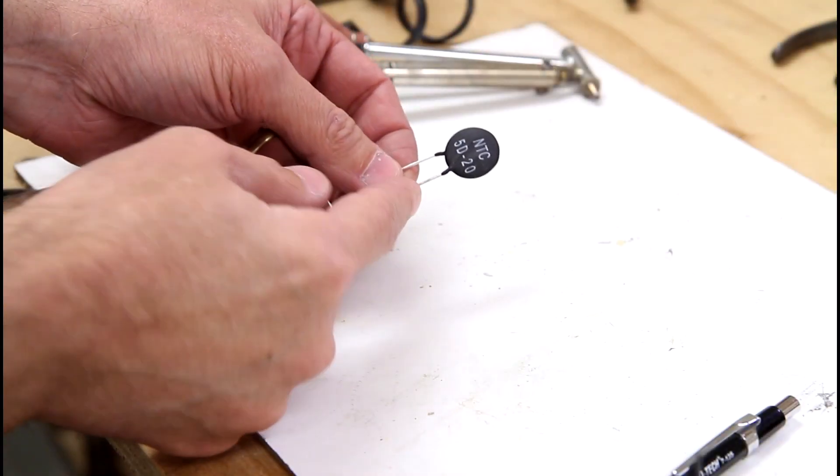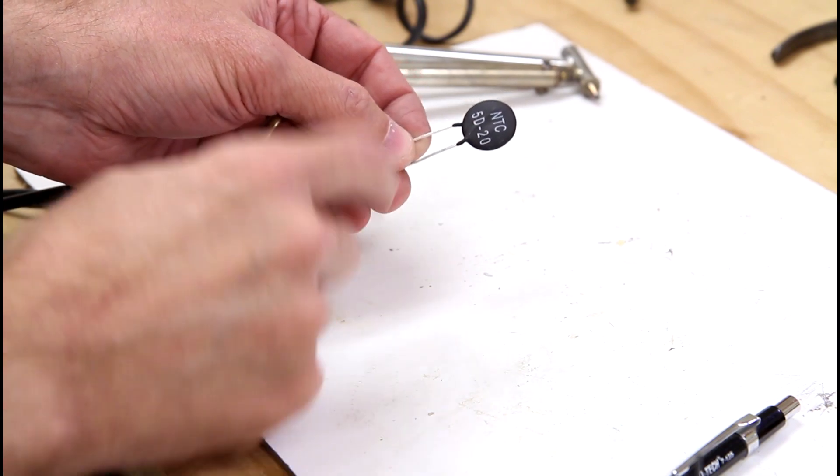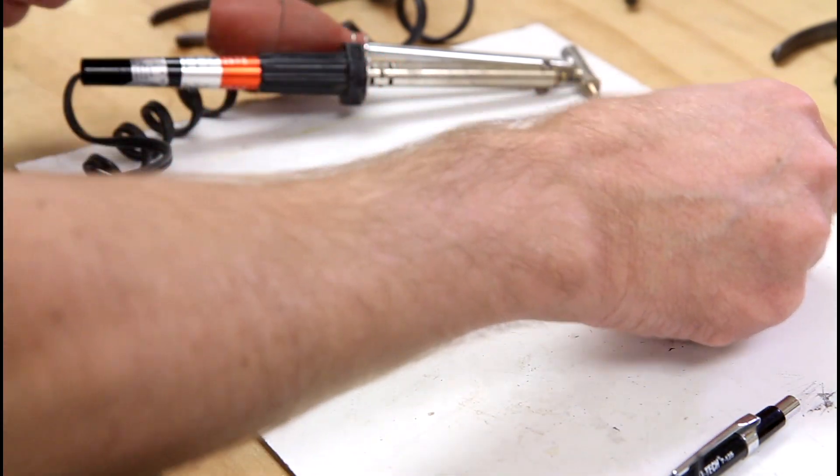Okay, so now that I removed the old leads I need to insert the new component. But before I do that I have to remove the solder from the circuit board.